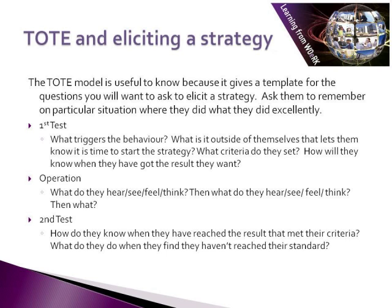Ask them to remember a particular situation where they did what they did excellently. In the first test you might want to ask: what triggers the behaviour? What is it outside of themselves that lets them know it's time to start the strategy? What criteria do they set? How will they know when they've got the result that they want? In the operations phase, ask what do they hear, see, feel and think — then what do they hear, see, feel and think? And then what? And so on until you finish the operations phase. And in the second test, ask how they know when they've reached the result that met their criteria, and what they do when they find that they haven't reached their standard.